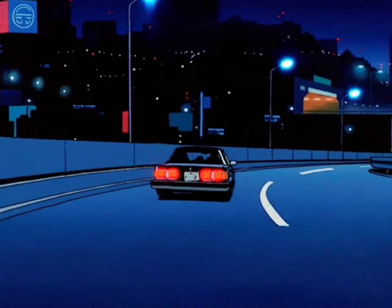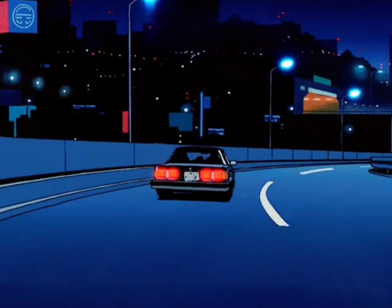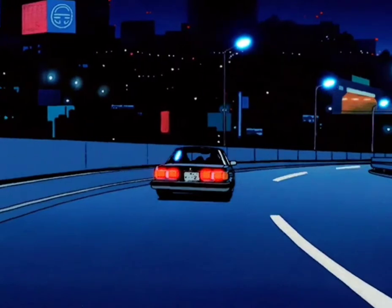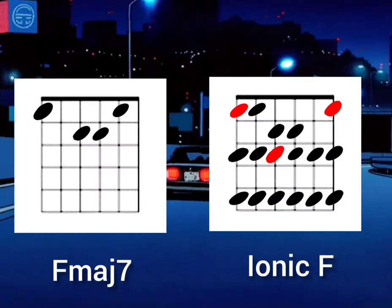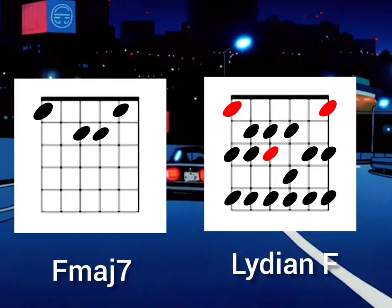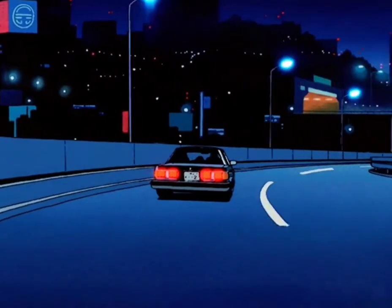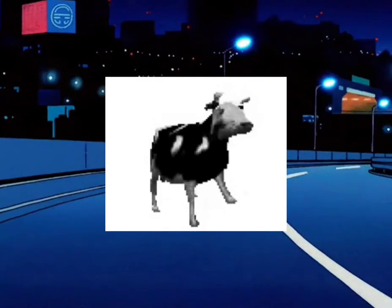The origin of each scale is related to its own mode and degree, but the truth is that we can use the scale we want to play on any chord — but only if it is of the same type. For example, to play on F major 7, we can play Ionian F or Lydian F. This is basically how lo-fi and aesthetic music work on the guitar.